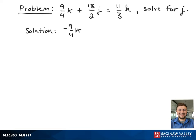We're going to first subtract 9/4 k from both sides so we can get closer to getting the j term by itself.